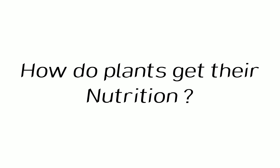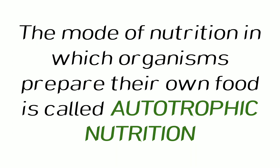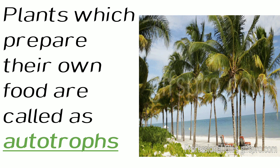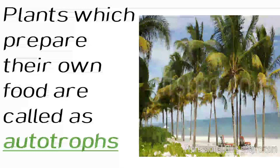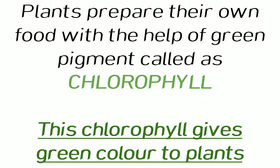In order to know how a plant gets its own nutrition, let us study about the modes of nutrition — that is, autotrophic nutrition and heterotrophic nutrition. The mode of nutrition in which organisms prepare their own food is called autotrophic nutrition. Plants that prepare their own food are called autotrophs. Plants prepare their own food with the help of a green pigment called chlorophyll. Chlorophyll gives the green color to plants.